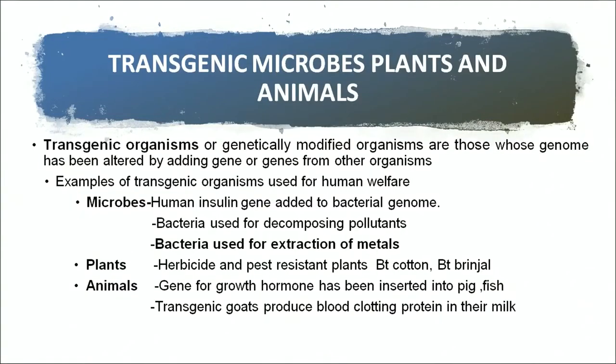Examples of transgenic organisms used for human welfare: in microbes, the human insulin gene has been added to a bacterial genome; bacteria are also used for decomposing pollutants and for extraction of metals in metallurgy. In plants, herbicide and pest resistant plants have been produced, for example BT cotton and BT brinjal. In animals, a gene for growth hormone has been inserted into pig and fish to increase body size, and in transgenic goats a blood clotting protein has been produced in their milk for patients suffering from haemophilia.